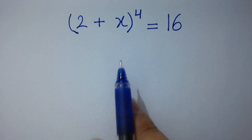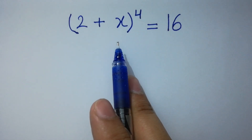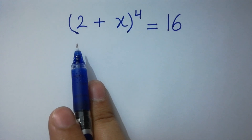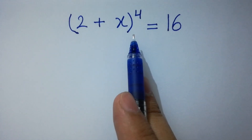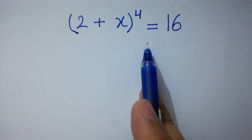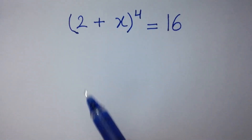Hello friends. Find the value of x if (2 + x) to the whole power 4 equals 16. Let's have a solution.